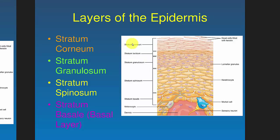The four layers are the stratum corneum, stratum granulosum, stratum spinosum, and the stratum basale or basal layer. You might notice I skipped over the stratum lucidum — that's the extra layer found in the palm of your hand and the sole of your feet, which makes your skin a little bit different there versus the back of your hand.